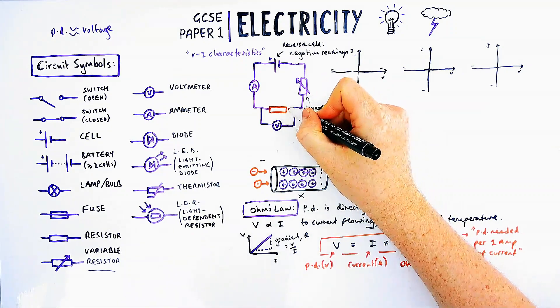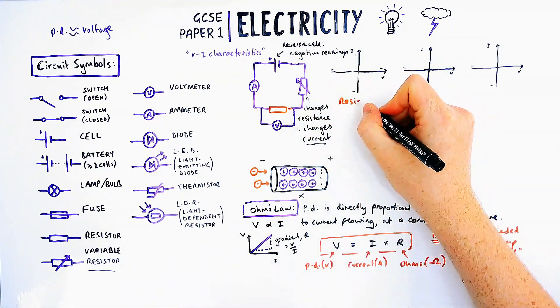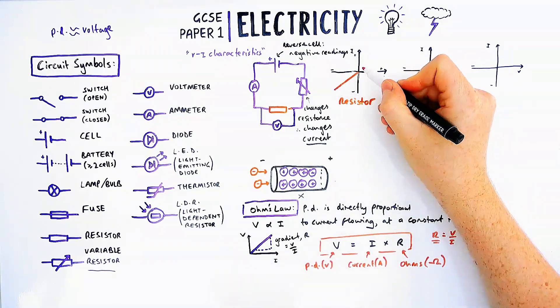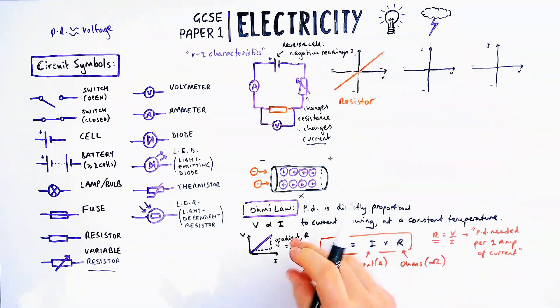The first component is the resistor, which we've already looked at. That's going to follow Ohm's law, so PD and current will be directly proportional - a straight line through the origin.